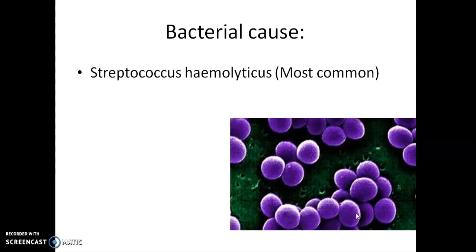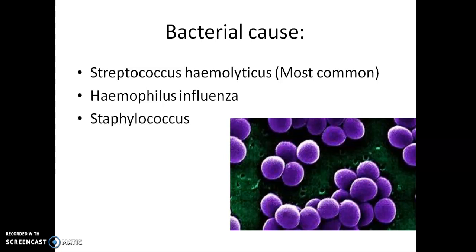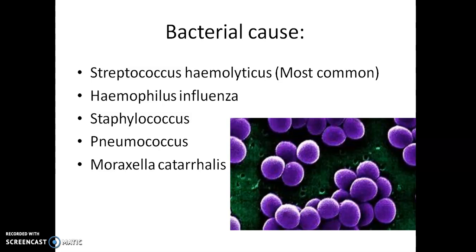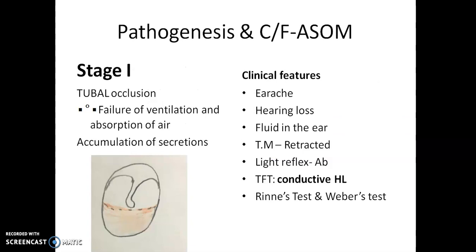The bacterial causes: the most common bacteria causing ASOM is Streptococcus haemolyticus. The second most common is Haemophilus influenzae. Next is Staphylococcus and Pneumococcus — all gram positive organisms. The last, rare possibility is Moraxella catarrhalis.